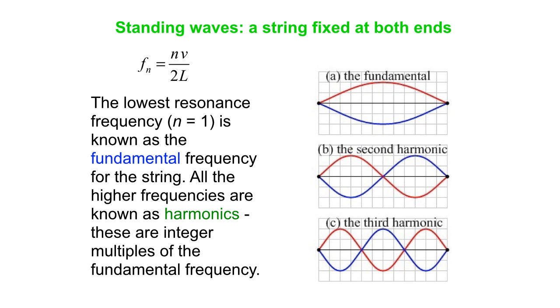With the fundamental, the string vibrates back and forth between the red picture and the blue picture with a single antinode and nodes at either end, and there are times when the string is completely flat. The second harmonic, there's two bumps. Third harmonic, there's three bumps, and it's always oscillating between the red picture and the blue picture.